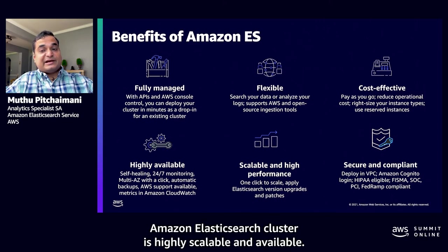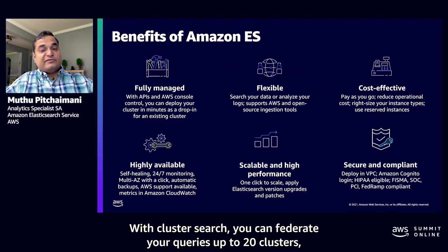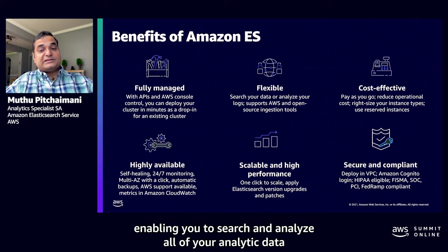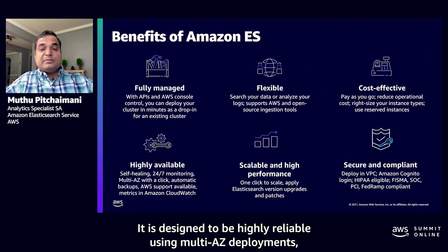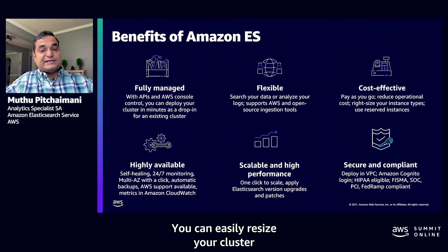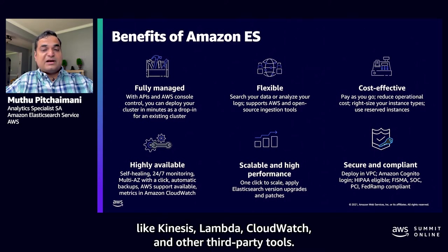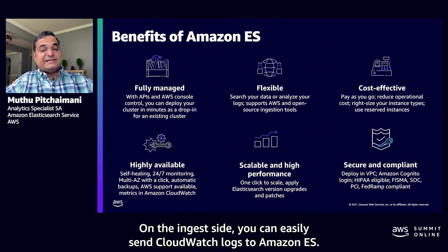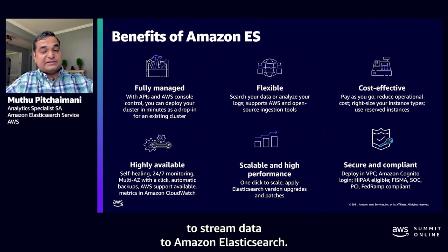Amazon Elasticsearch Service is highly scalable and available — it lets you store up to three petabytes of data in a single cluster. With cross-cluster search, you can federate your queries up to 20 clusters, enabling you to search and analyze all analytic data via a single Kibana interface. It is designed to be highly reliable using multi-AZ deployments, which allows you to replicate data between AZs in the same region, and you can easily resize your cluster with a few clicks or a single API call. The service natively integrates with AWS services like Kinesis, Lambda, CloudWatch, and other third-party tools.